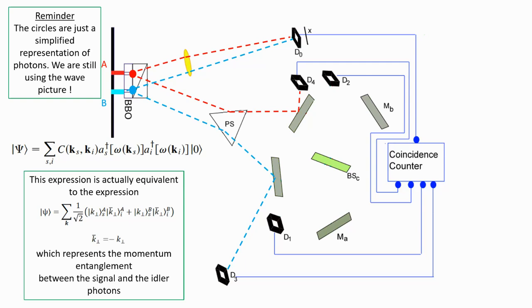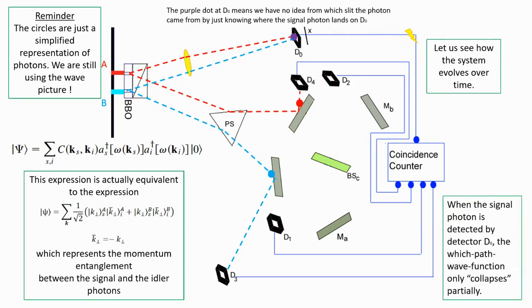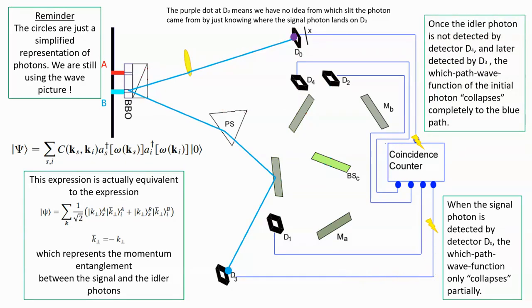Let us see how the system evolve. The purple dot on the detector D0 represents that we have no idea from which slit the photon came from by only knowing where it lands on the detector D0. When the signal photon is detected by D0, the state collapses only partially, because the idler photon still carries the which path information and has not yet been detected.